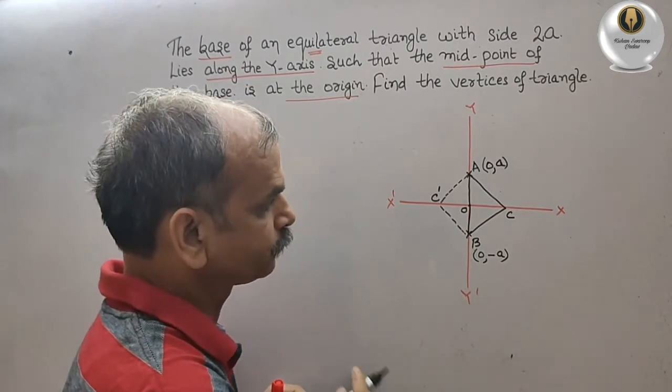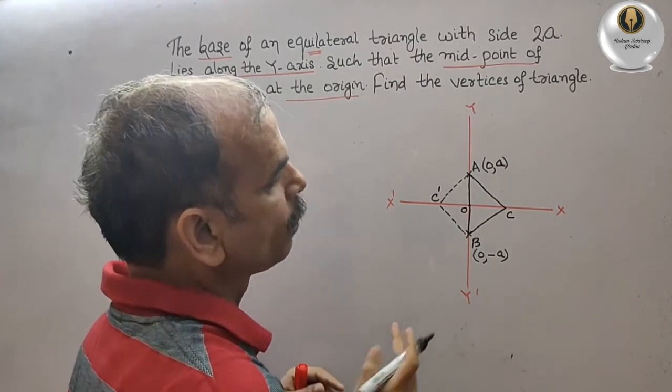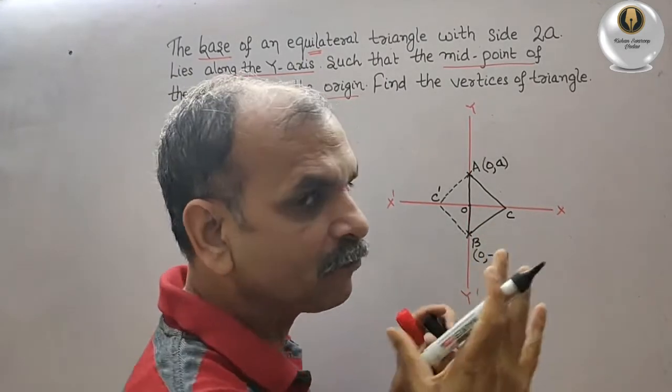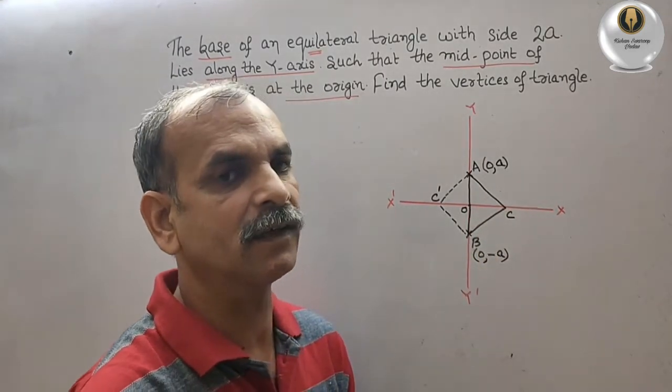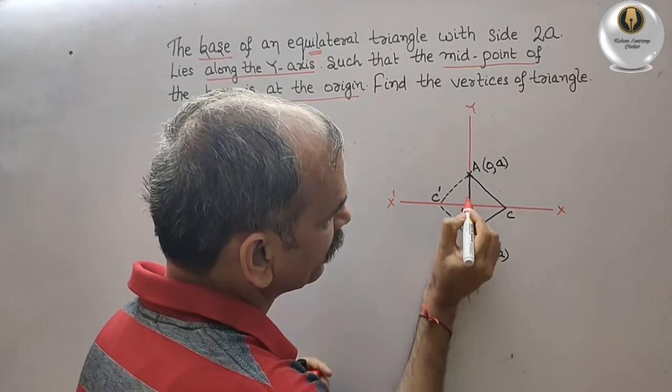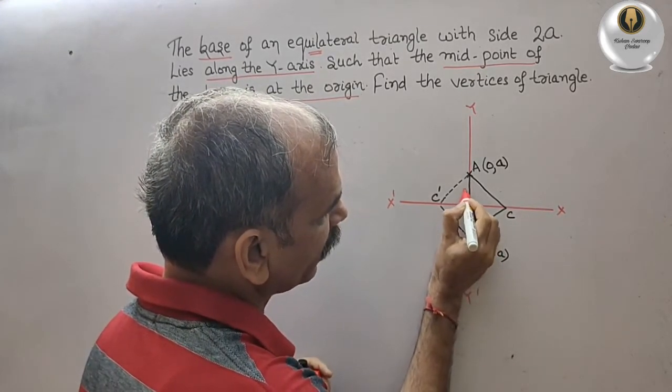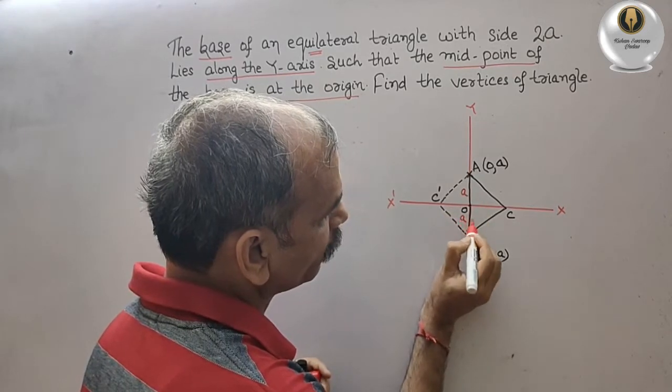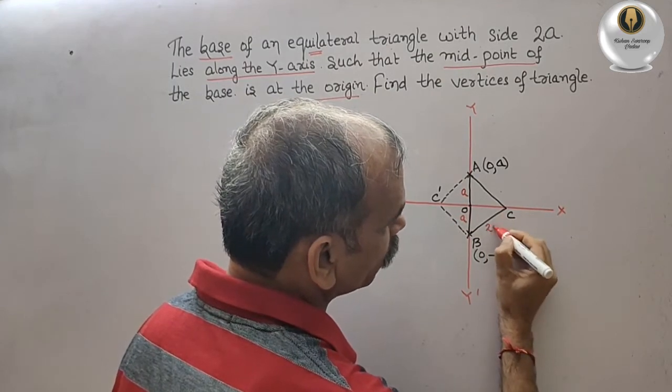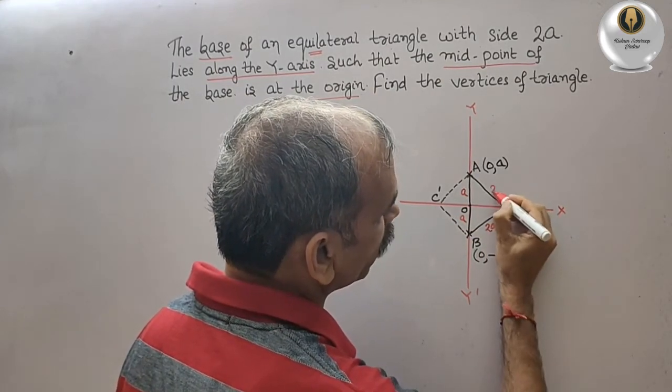Okay, now above we know that in an equilateral triangle all sides are equal. So that means this is your A, this is your A, but this side is your 2a and this is also 2a.